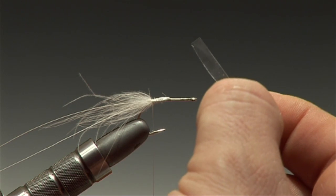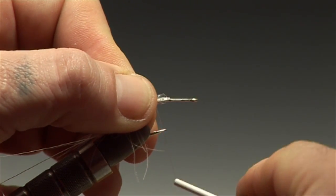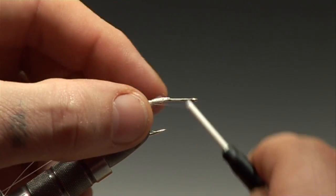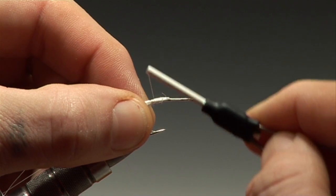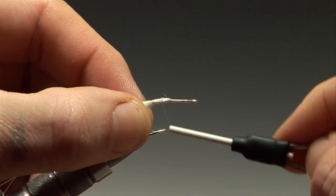Now cut a strip of a clear relatively stiff shellback material. This will form the exoskeleton of the shrimp and secure this just at the base of the beard.